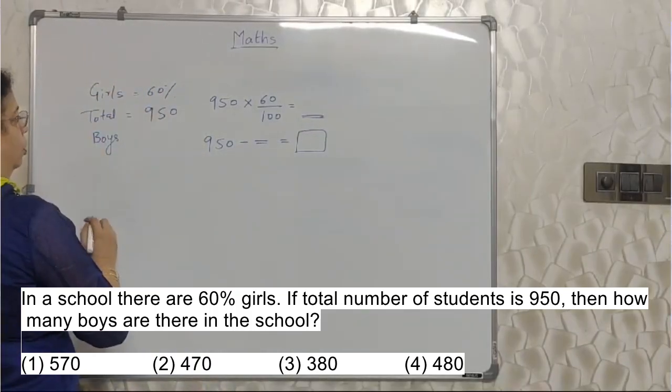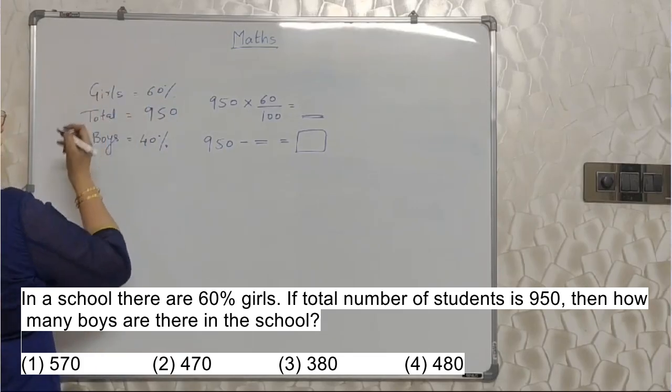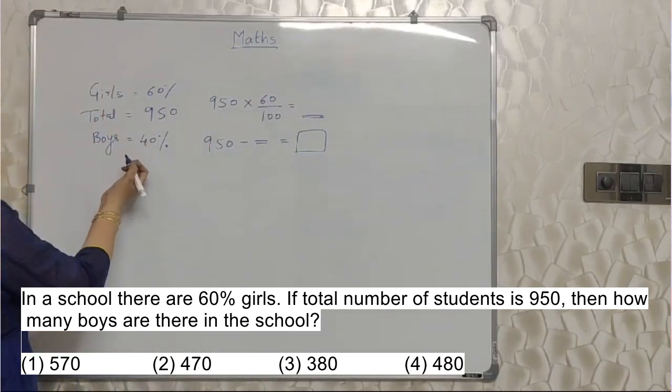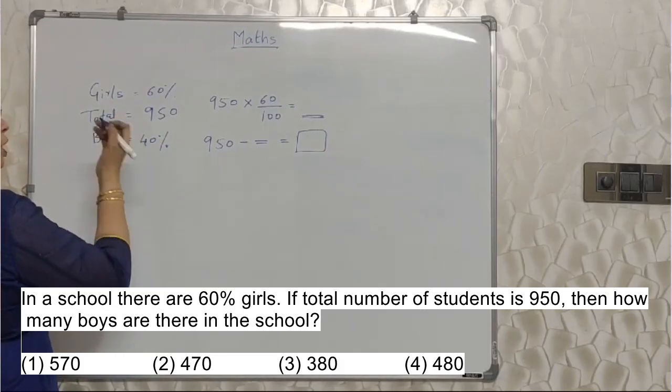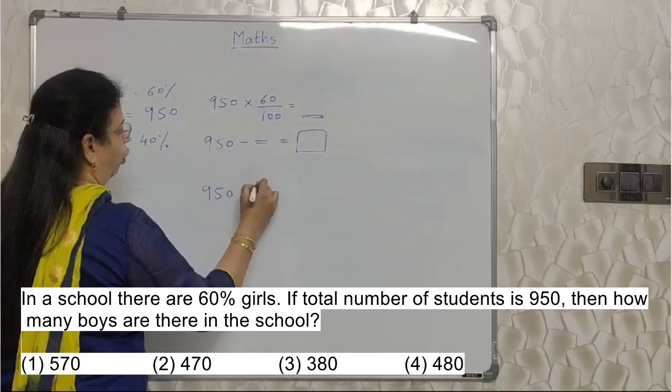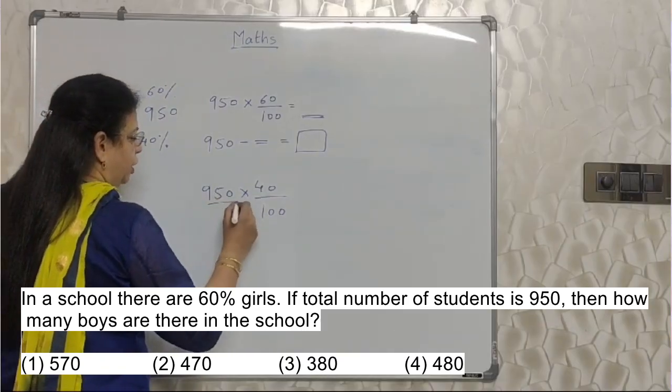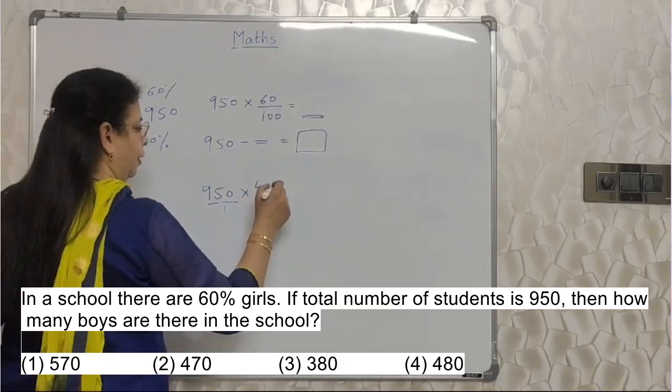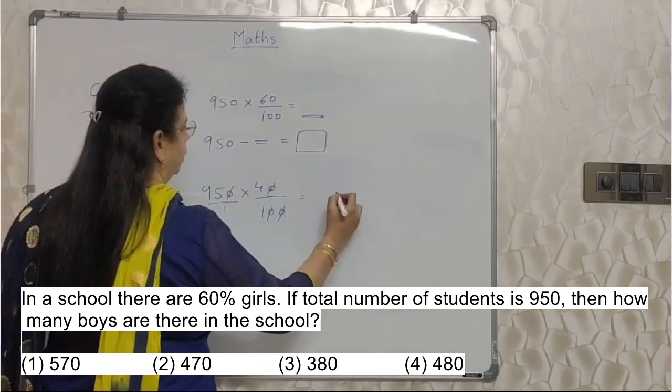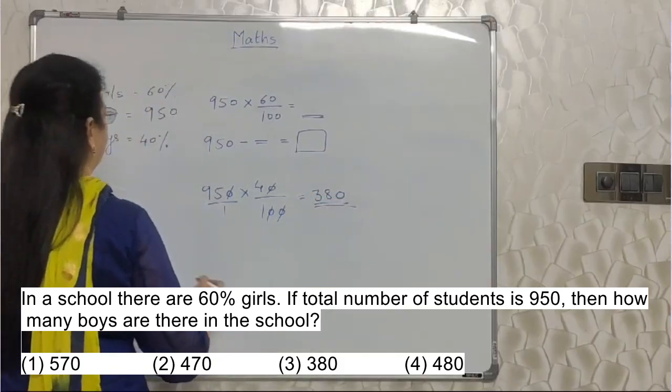So instead of that, what can be done? If 60% girls are there, so remaining 40% must be boys. 60 plus 40 equals 100%. 60% girls are there means boys are 40%. So why do we have to take help of girls percentage? Straight away they are asking boys. How many boys are there? So we will make the use of boys percentage. So straight away we can make use of this 40%. 40% means upon 100. We can do this. See 950, you can write 1 below to avoid the confusion. 1 and 0 cancel. You can cancel zeros. So 95 into 4. How much it is? 5 fours are 20. 9 fours are 36 plus 2 is 38. 380 boys is the answer.